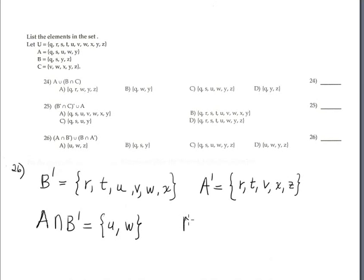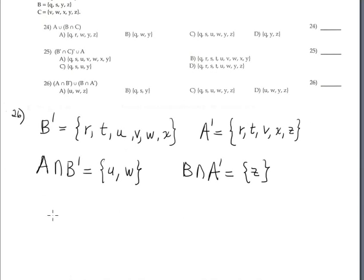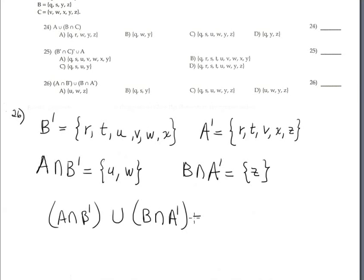Otherwise, B complement intersection A complement is the common between B and A complement. Q is no, S is no, Y is no, and C is yes — just C. And finally, the union between A intersection B complement and B intersection A complement gives us U, W, and C.